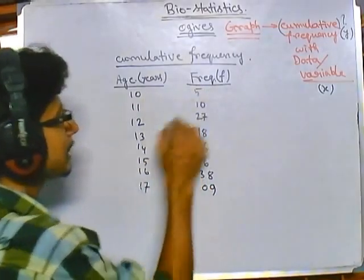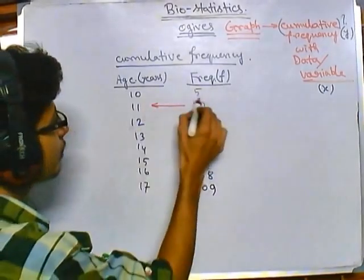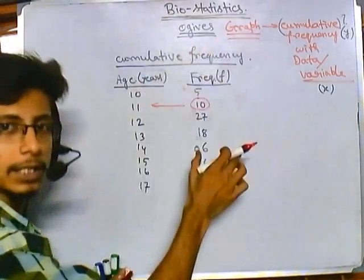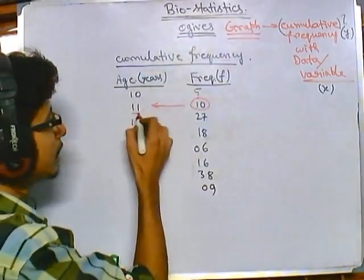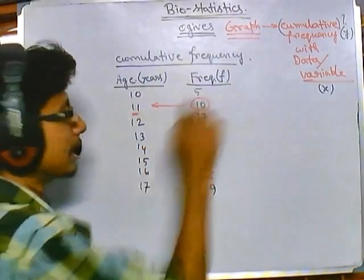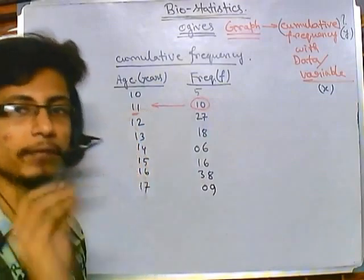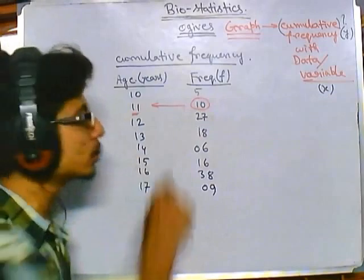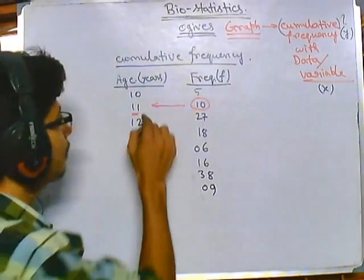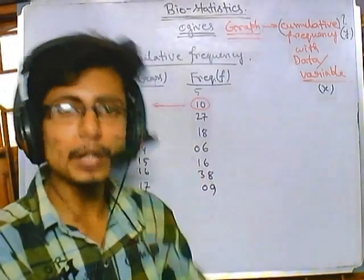By looking at the absolute frequency, we can tell that the age 11 is repeated 10 times, meaning there are 10 people in the population with age 11. However, when we compute cumulative frequencies, we can tell not only how many people have a specific age, but also how many people are below a certain age — for example, how many people are below the age of 11. This is the importance of cumulative frequency.